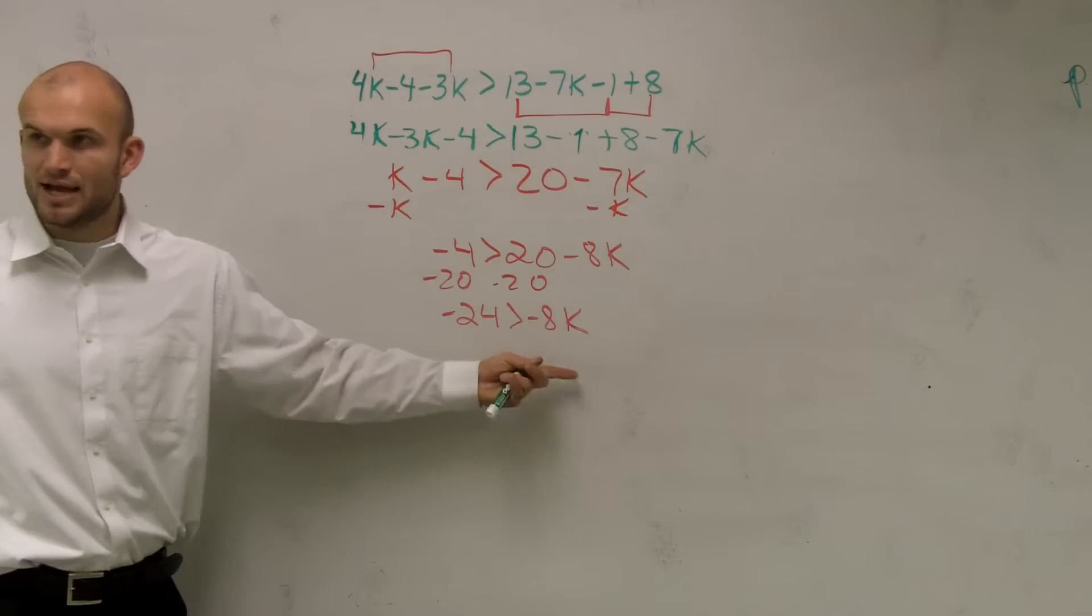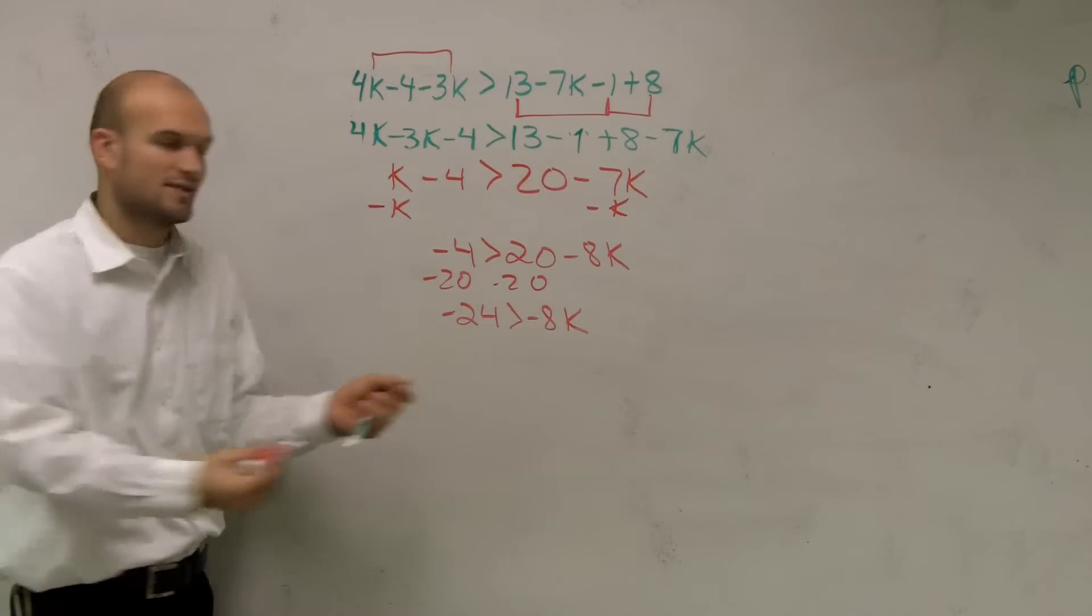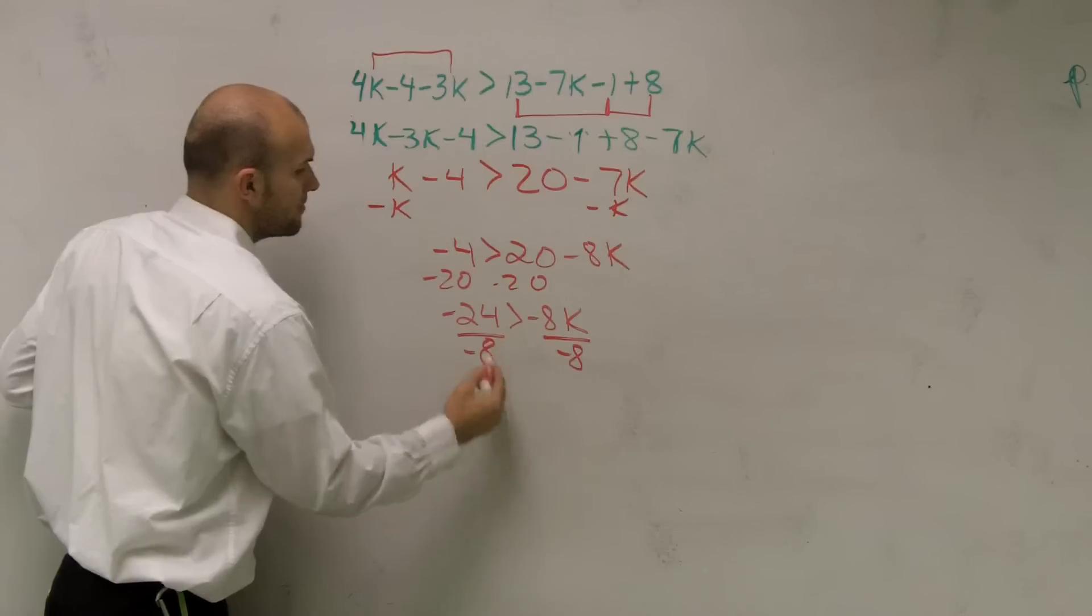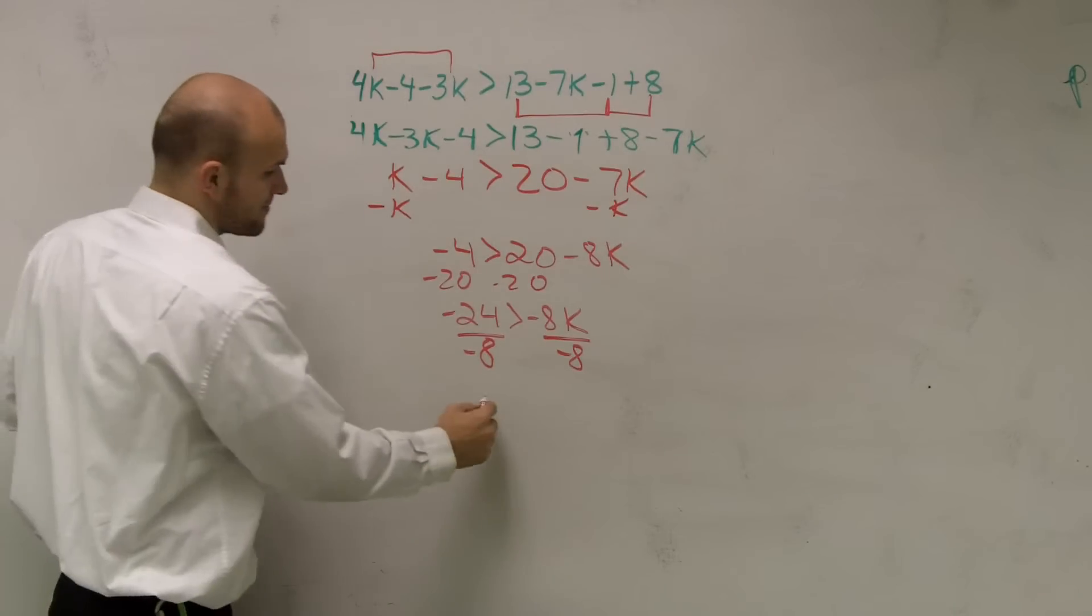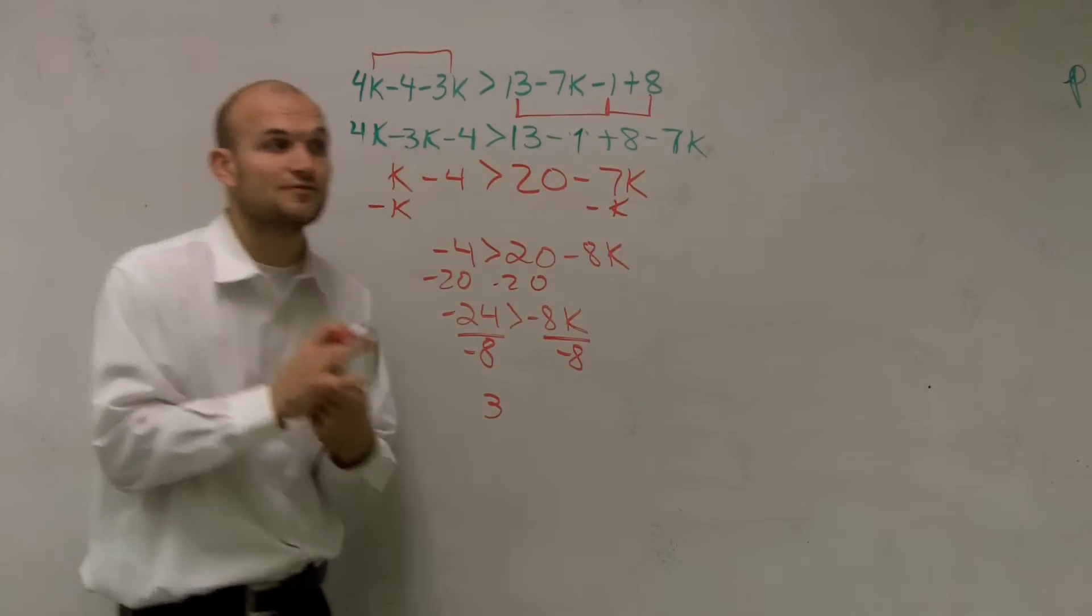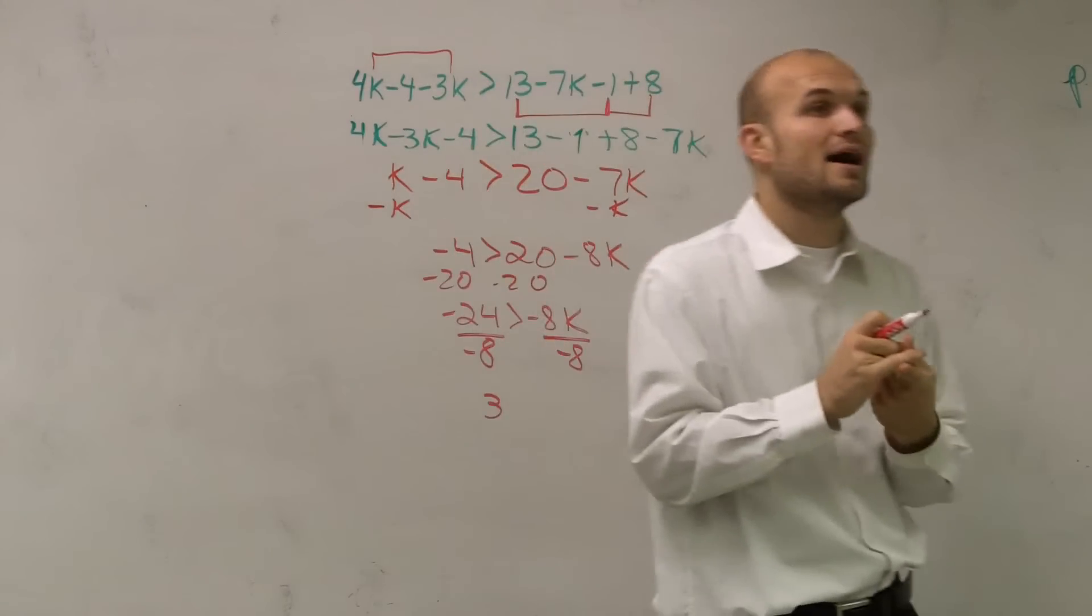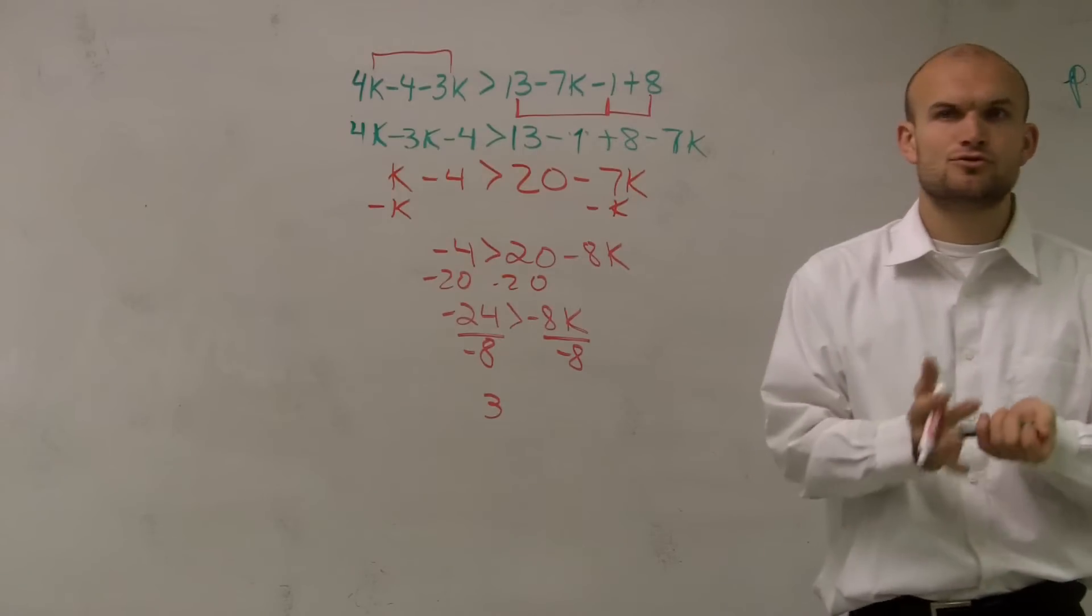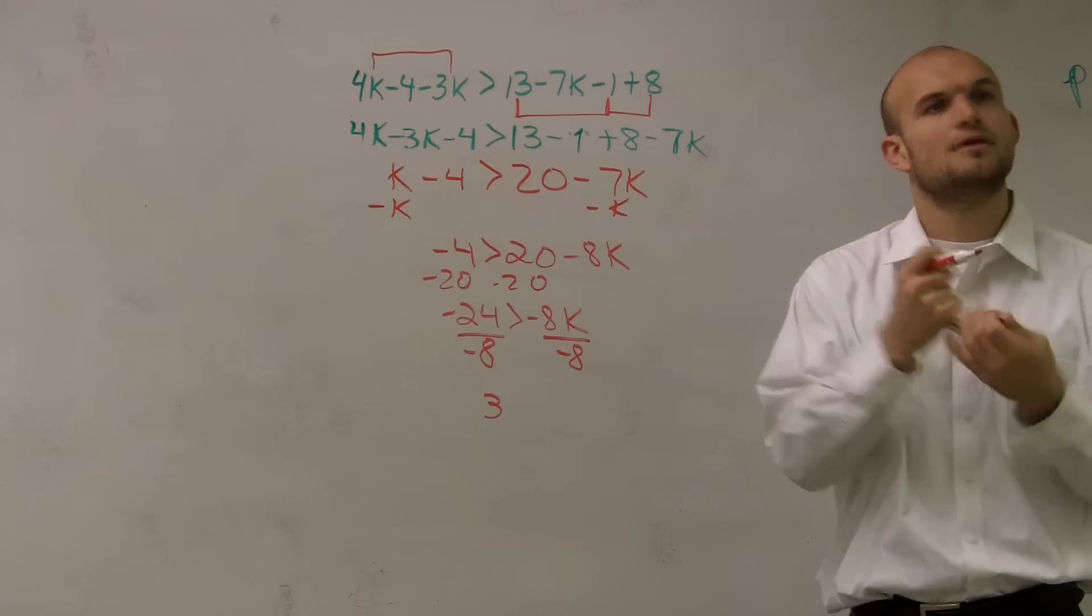Negative 24 is greater than negative 8K. Now, do you see why this gave me now a negative? So, it's not hard. I can get rid of a negative by dividing by negative 8. But the thing that you guys need to remember is, remember, whenever you divide or multiply, please write that down if you forgot it. Whenever you divide or multiply by a negative number, you have to flip the sign.